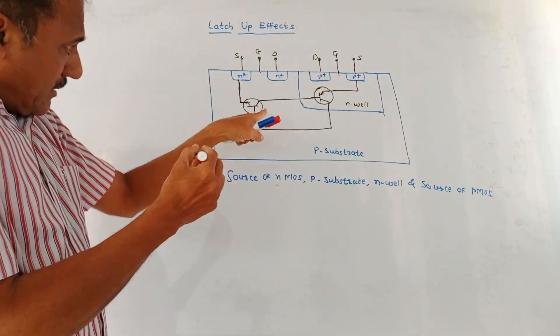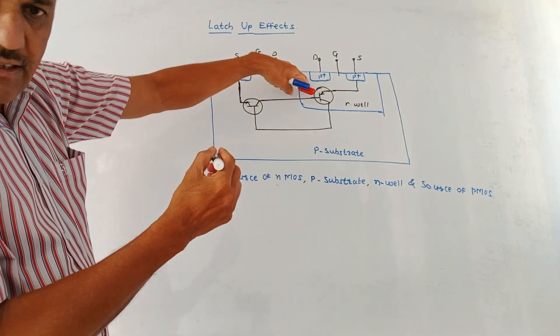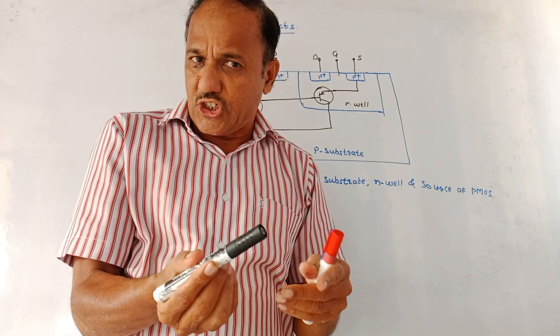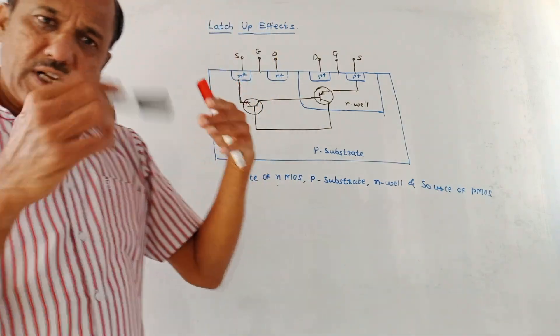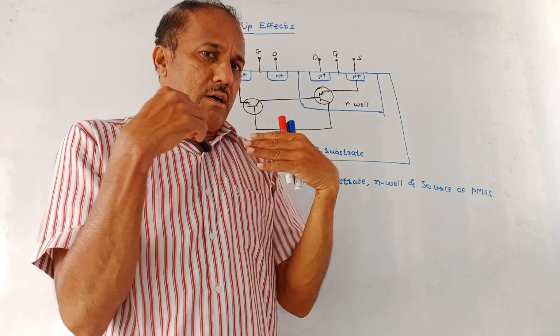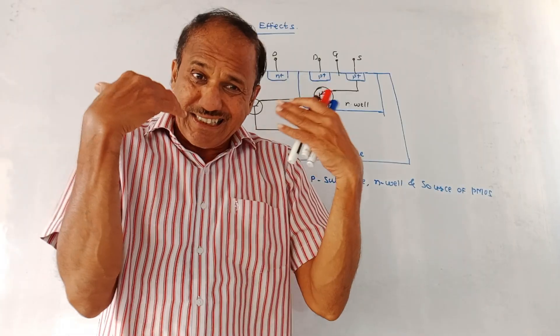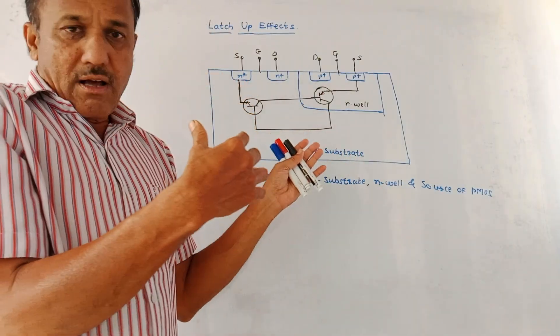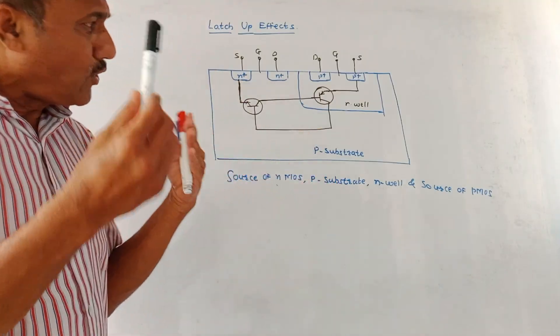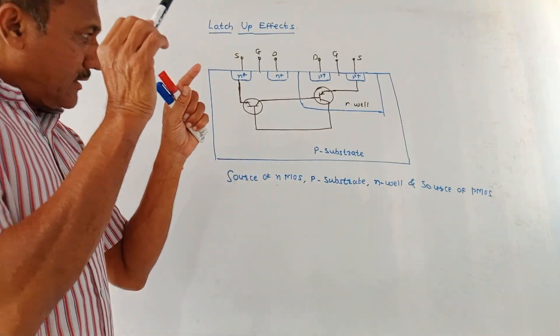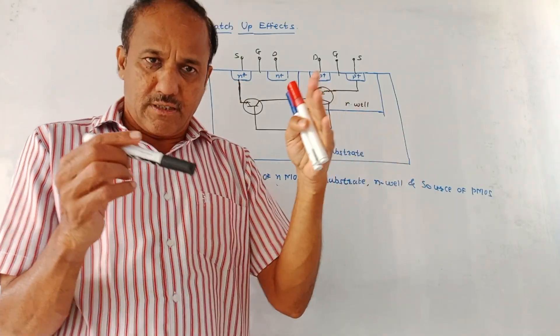Look at this connection. The output of this NMOS is applied at the base terminal of the second transistor. Whenever this NMOS starts conducting, it gives a large amount of current to the another transistor. It may happen that due to excess current, this transistor may go into saturation or may burn out. To avoid all such things, there is a crucial role as far as this P substrate and N-well is concerned.